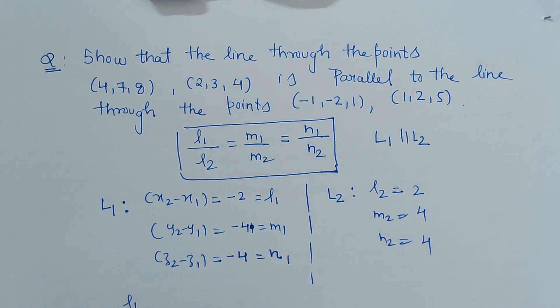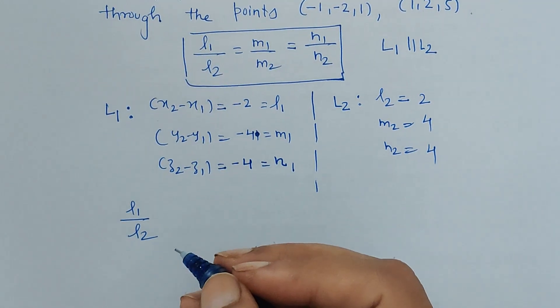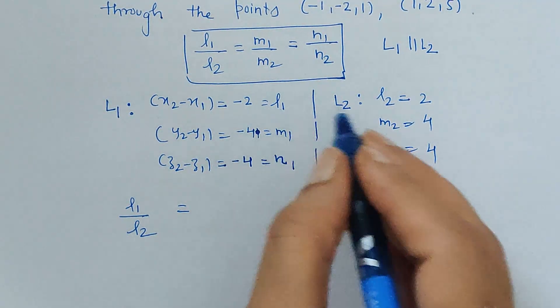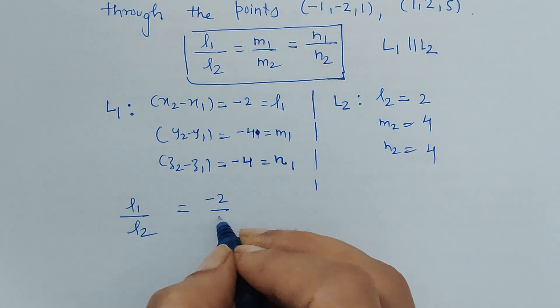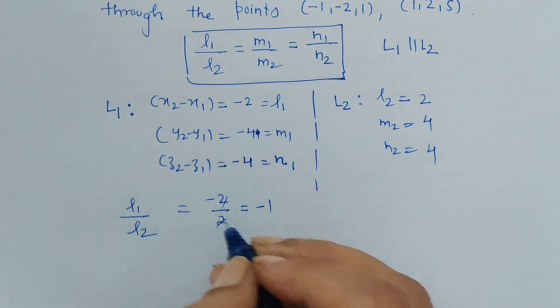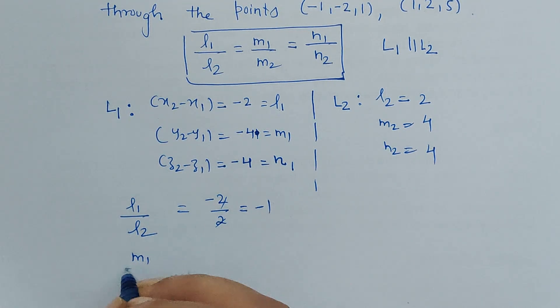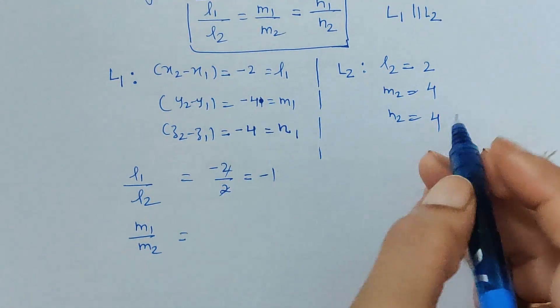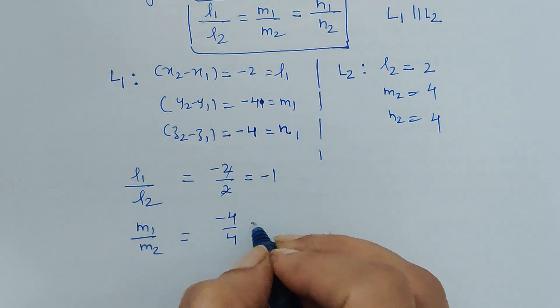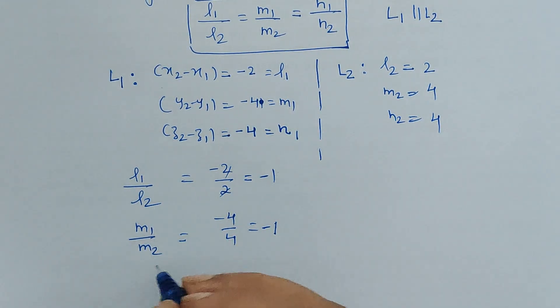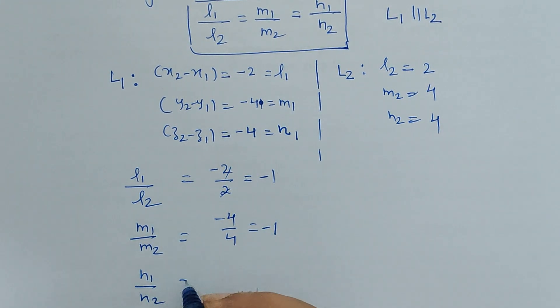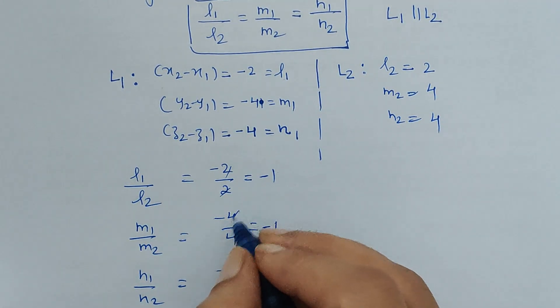Now we just have to find out the ratios. Here, l1 upon l2 is what? l1 upon l2 is minus 2 upon 2, this is minus 1. Then m1 upon m2 is minus 4 upon 4, which is minus 1.